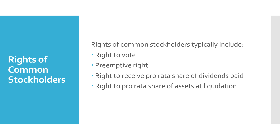If there's only one class of stock specified in the charter, it's going to be common stock. The rights of common stockholders typically include the right to vote, mainly to elect the board of directors whose job it is to represent their interest in overseeing management and the business. The preemptive right is another right of common stockholders, meaning that if the company issues additional shares, they have to offer the stock first to existing shareholders so they can maintain their percentage ownership interest. For example, if I owned 5% of a company and that company issued additional shares, they would have to offer me 5% of that new offering so I could maintain my 5% interest.